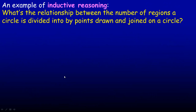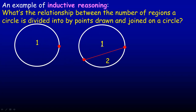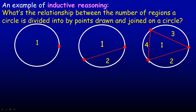Here's another example of inductive reasoning. What's the relationship between the number of regions a circle is divided into by joining points drawn on the edge of the circle? If we draw one point, there's no other point to connect it to — there's only one region. If we draw two points and join them, there are two regions. If we draw three points and join them all with line segments, called chords, it divides the circle into four regions.